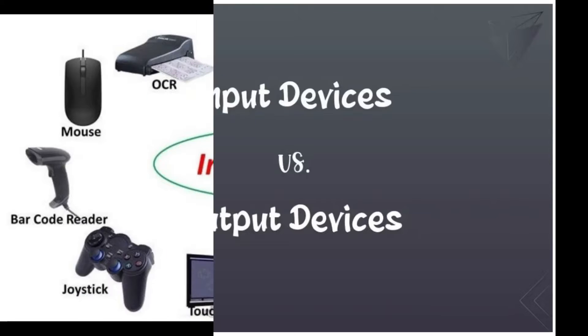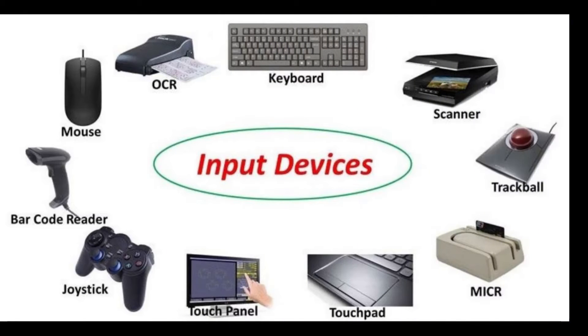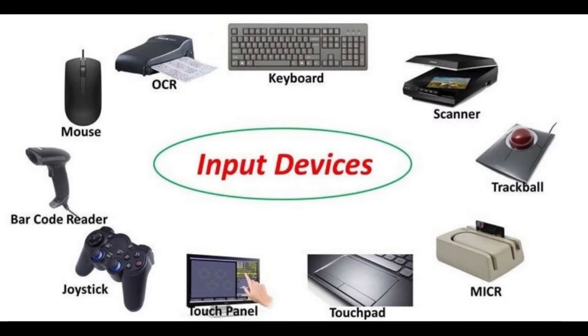The designation of a device as either input or output depends on perspective. Mice and keyboards take physical movements that the human user outputs and convert them into input signals that a computer can understand. The output from these devices is the computer's input. Similarly, printers and monitors take signals that computers output as input, and they convert these signals into a representation that human users can understand. From the human user's perspective, the process of reading or seeing these representations is receiving output.